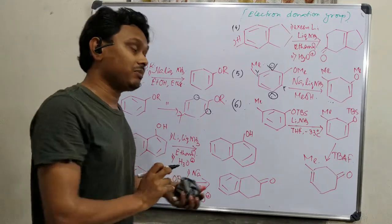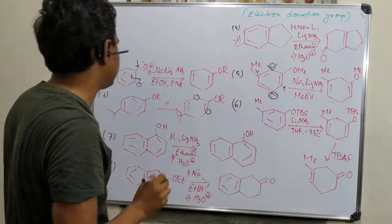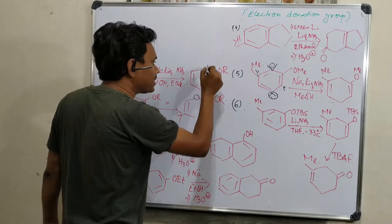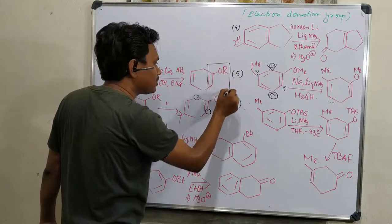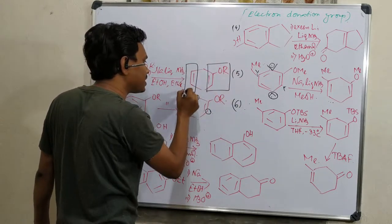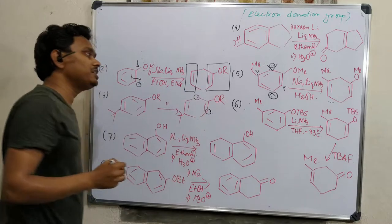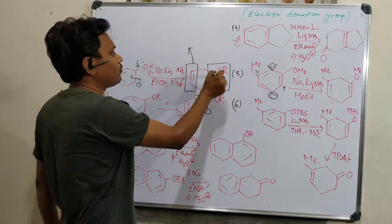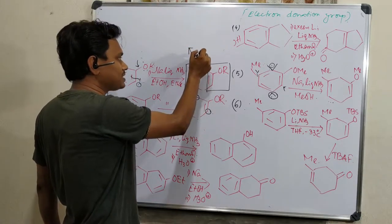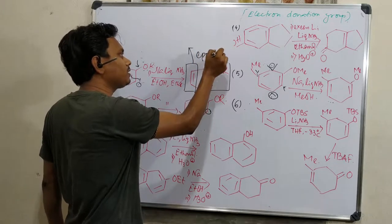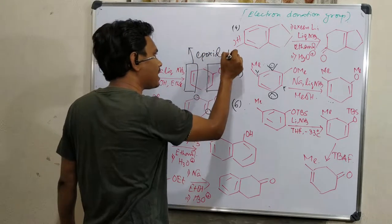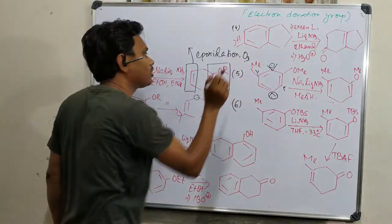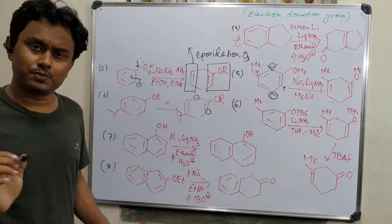This is an activated double bond and this is a relatively less activated double bond. Depending upon the choice of proper reagent, these could be functionalized differently. For example, epoxidation using oxygen, diol formation, and so on — many reactions could be done.